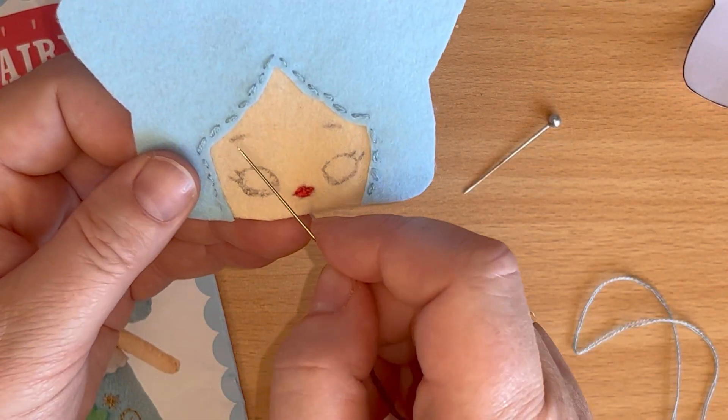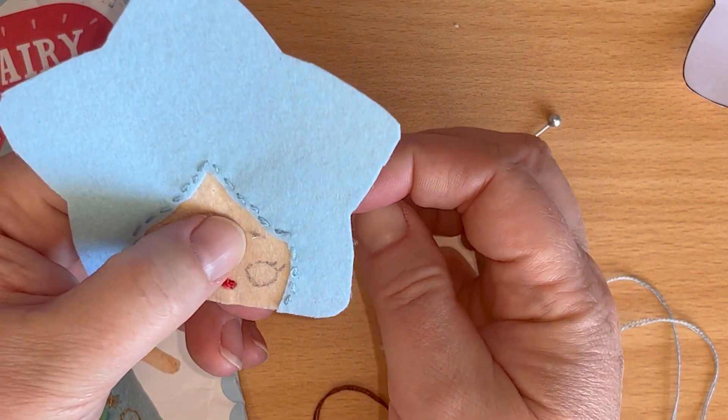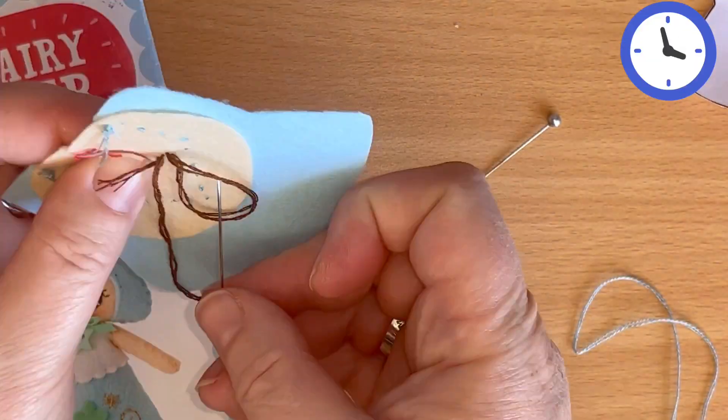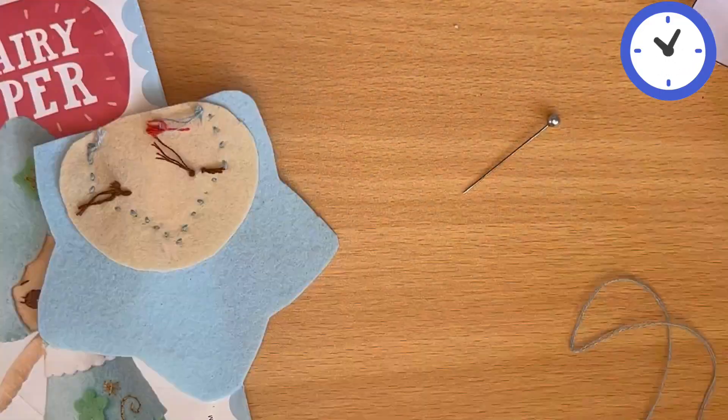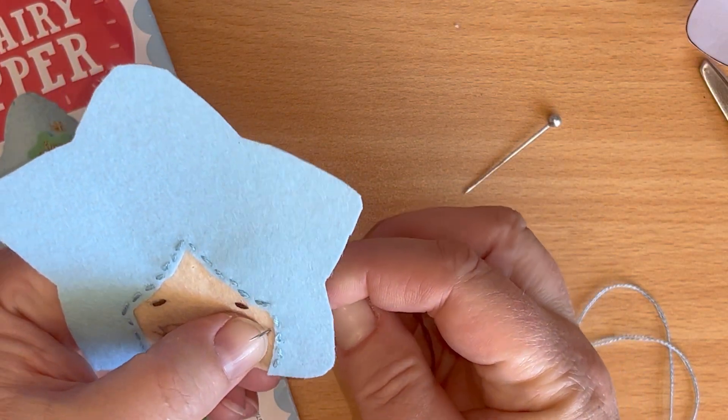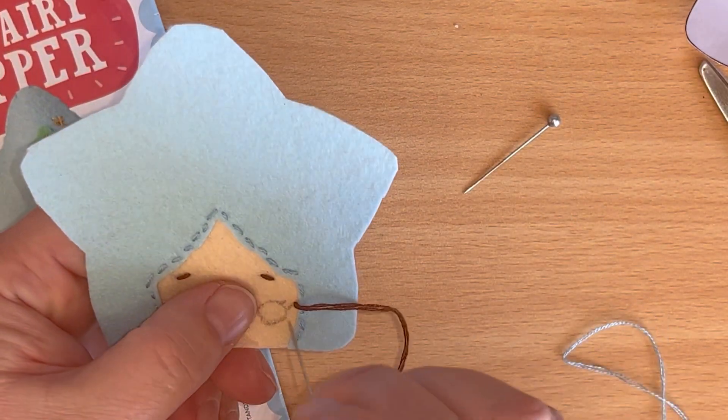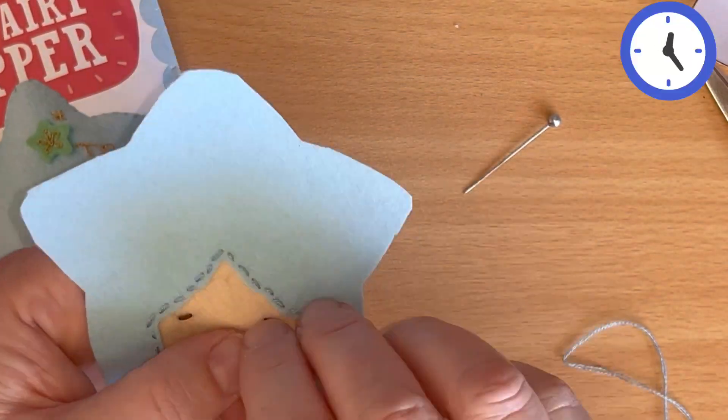Next we're going to do the eyes, starting with the eyebrows and then we'll work our way around the eyes and then the eyelashes. Starting with the eyelashes at the side and then do around the outline and then fill in with a satin stitch.